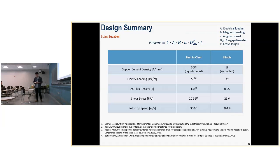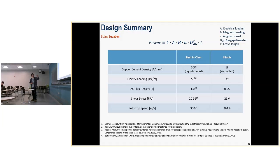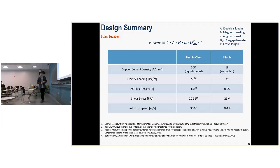The design summary shows how we are pushing the power density of our motor to match or exceed other designs. Looking at copper current density, the best in class in aerospace is 30 amps per millimeter squared — and that's liquid cooled. For air cooled, which we're adopting, the values are about 5 to 10. That's where we're pushing our design limits. The electrical loading relates to the heat flux of the design. Since we have a narrow winding area, we achieve a fairly low electrical loading even with high copper density. Our air gap flux density is comparable with others, as are shear stress and rotor tip speed.